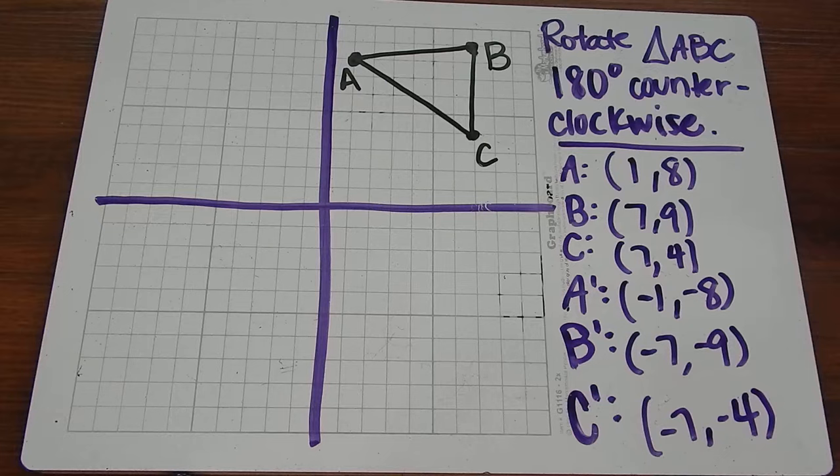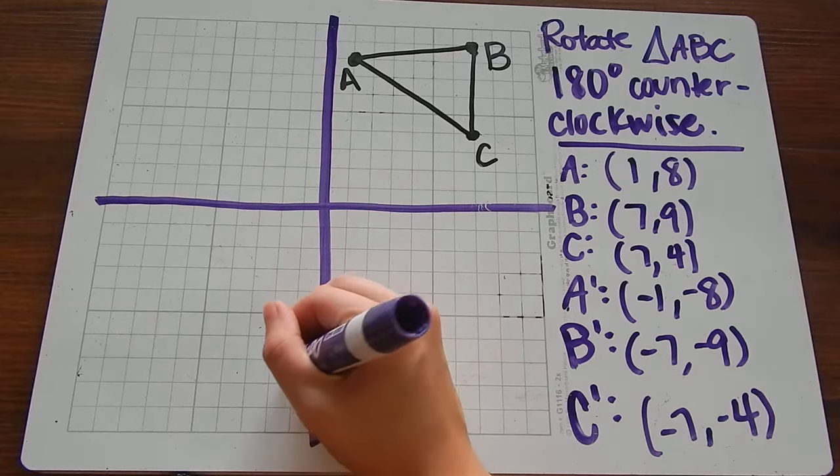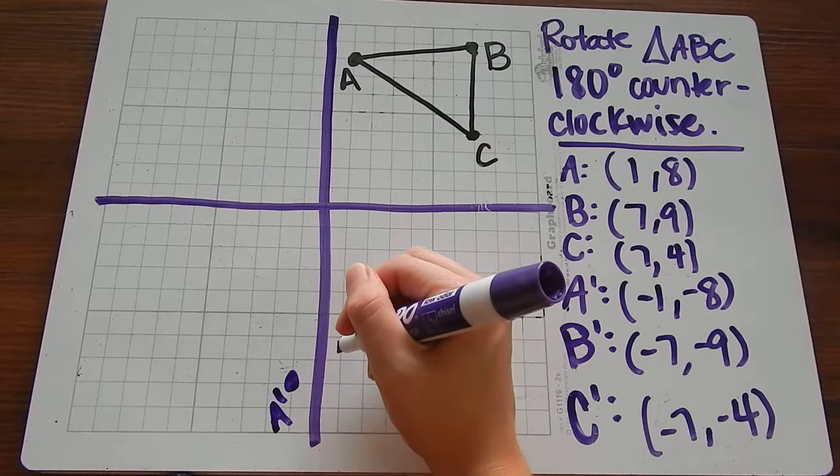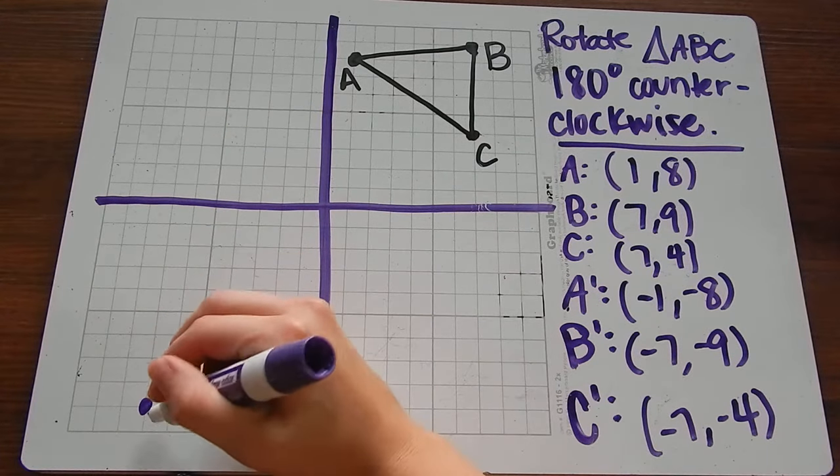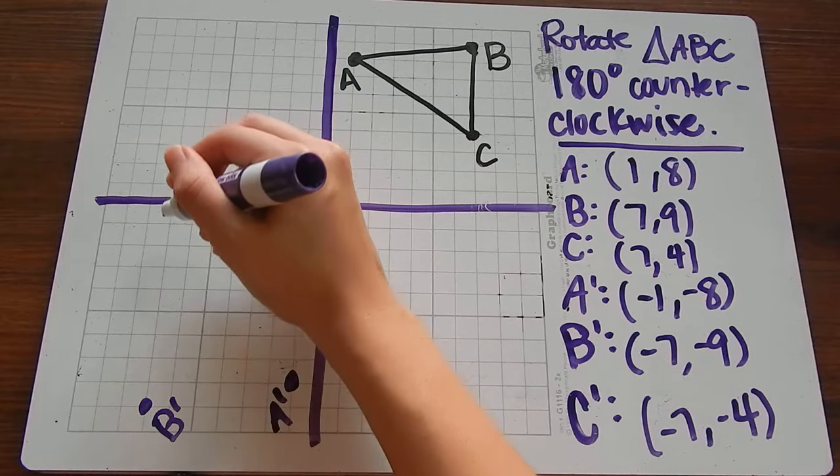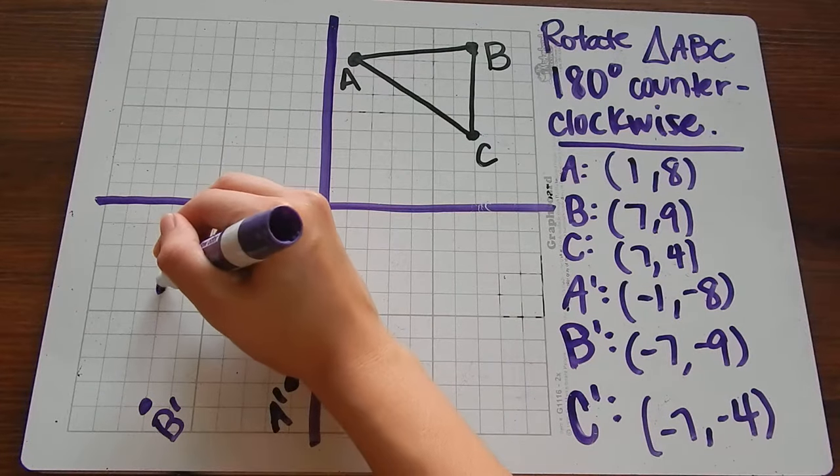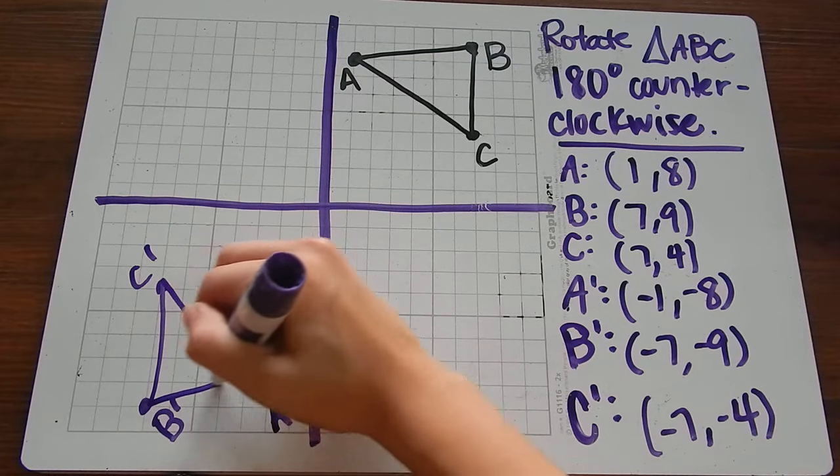And we can actually plot those points and draw our new triangle. So A prime is (-1, -8). B prime is (-7, -9). And C prime is (-7, -4). And here is our new triangle.